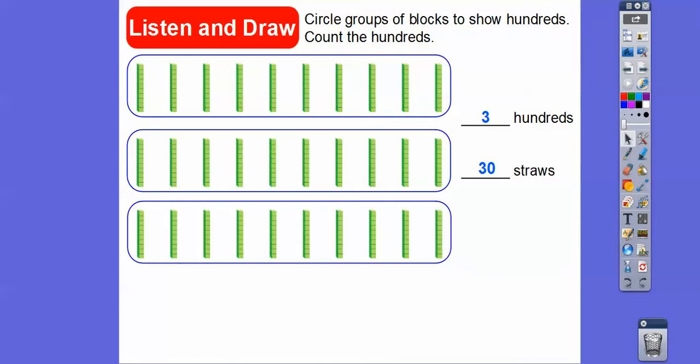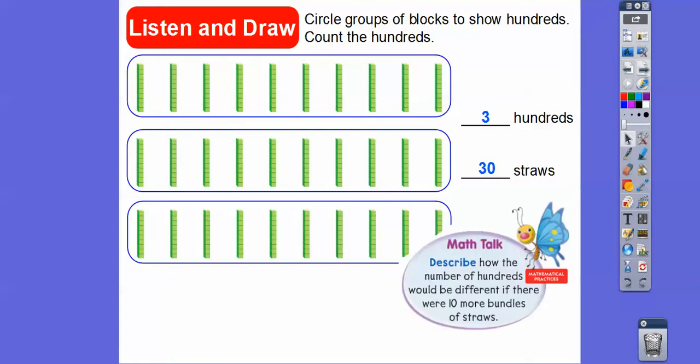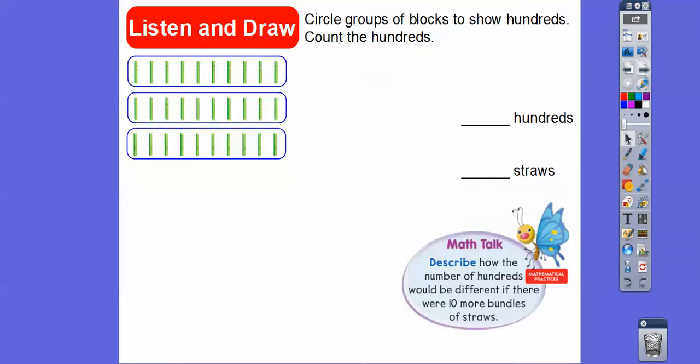There are thirty tens, or three hundreds, written as 3-0-0. Now describe how the number of hundreds would be different if there were ten more bundles of straws. I'm interpreting it as this: this is a bundle of straws, so we're going to make ten more of these.